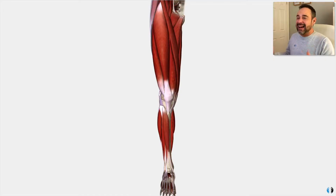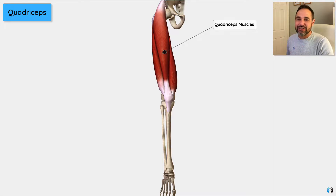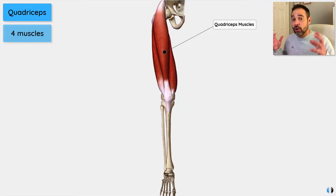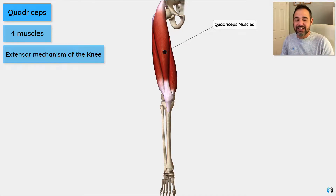Where better to start when looking at any injury than our 3D anatomy model? Here we have our 3D anatomy model, so let's dive into the quadriceps muscles, which are pivotal to the quadriceps and patellar tendon that we're going to go through. The quadriceps is a group of four different muscles that all join together to form the extensor mechanism of the knee, all inserting into the quadriceps tendon, which becomes the patellar tendon — the two key tendons we're focusing on today.